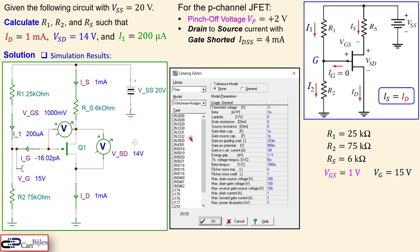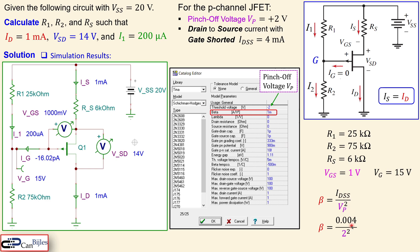Looking at the SPICE model for this P-channel JFET in the simulator: the threshold voltage is entered as a negative value even though it is positive in our analysis — that is a simulator convention. To reflect IDSS, the parameter beta is used, calculated as beta = IDSS / VP² = 0.004 / (2)² = 1 mA/V². Note that this beta is not the BJT current gain.